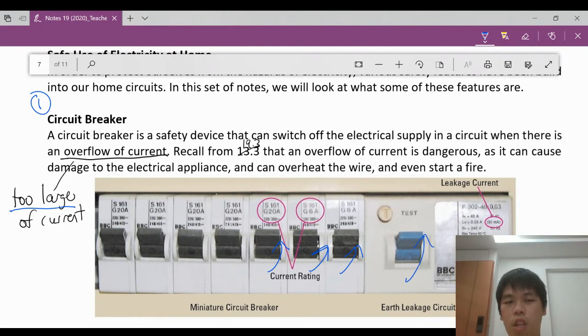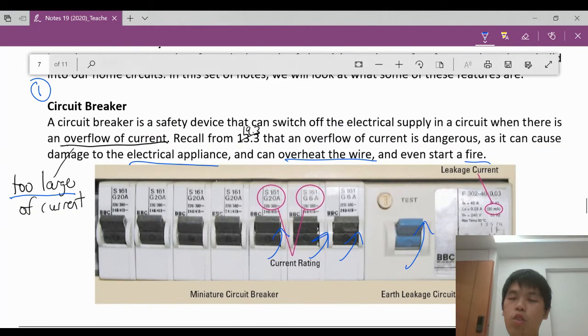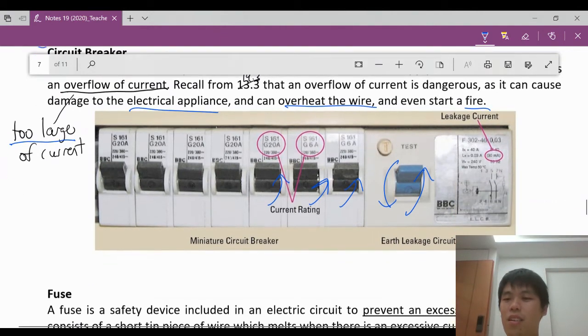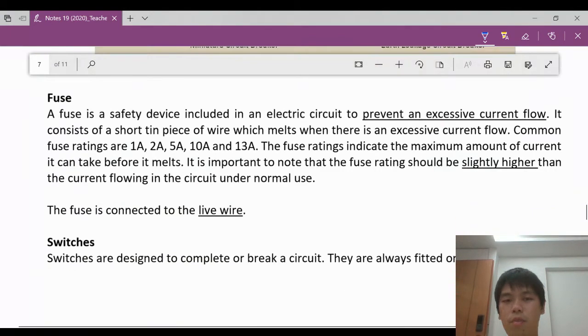What will happen? If the current flows through is very dangerous, it can damage the electrical appliance. It can overheat the wire. It can start an electric fire. Why do we want to use this? Because it's easy. We can just flip it back down. Everything will be functional. Everything can work again. You don't have to replace the whole thing.